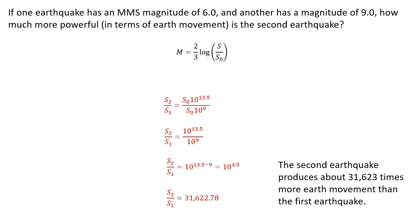So what does this tell us? This tells us that the second earthquake produced about 31,623 times more earth movement than the first earthquake did. So it gives us some idea how much more powerful that second earthquake was.